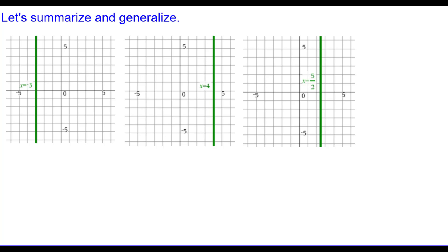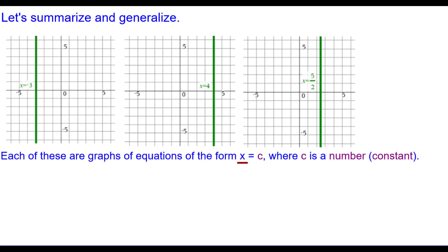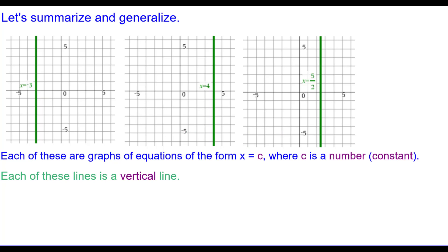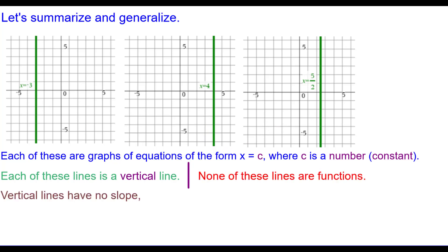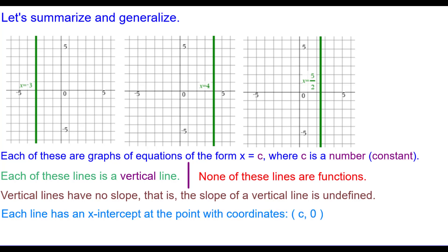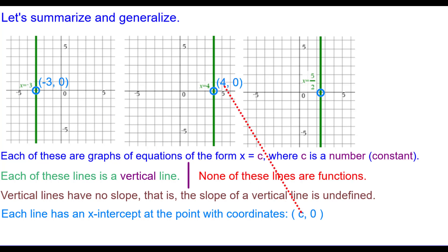Let's summarize and generalize our findings. Each of these graphs of equations are of the form x equals a constant. Each of these lines is a vertical line. None of these lines are functions. Vertical lines have no slope, or the slope of a vertical line is undefined. Each line has an x-intercept at the point with coordinates (constant, 0). For example, x equals negative 3 has x-intercept negative 3 comma 0; x equals 4 has x-intercept 4 comma 0; x equals 5 halves has x-intercept 5 halves comma 0.